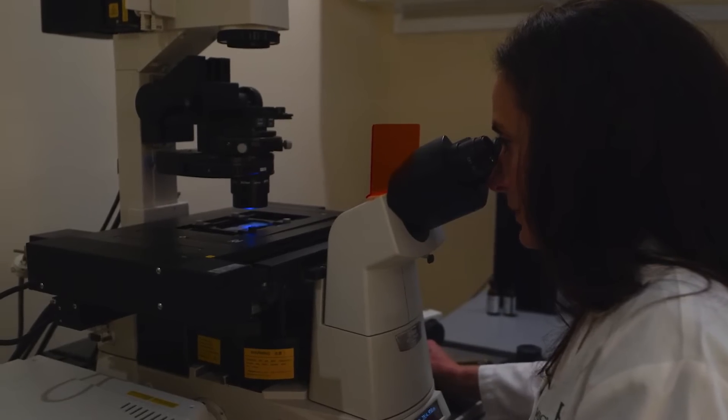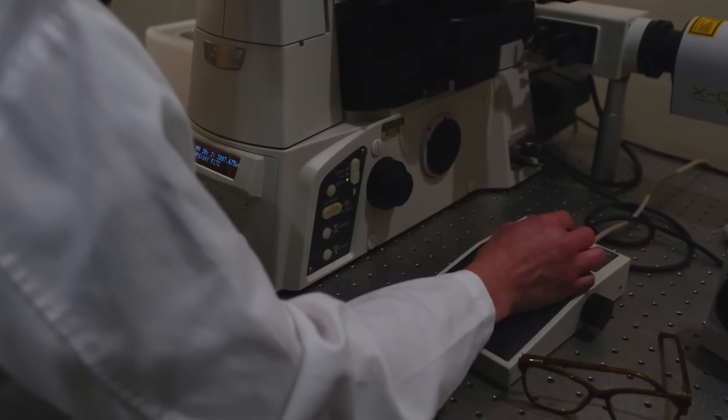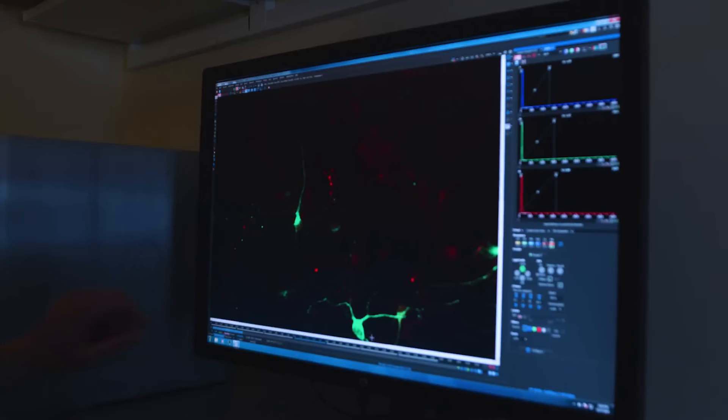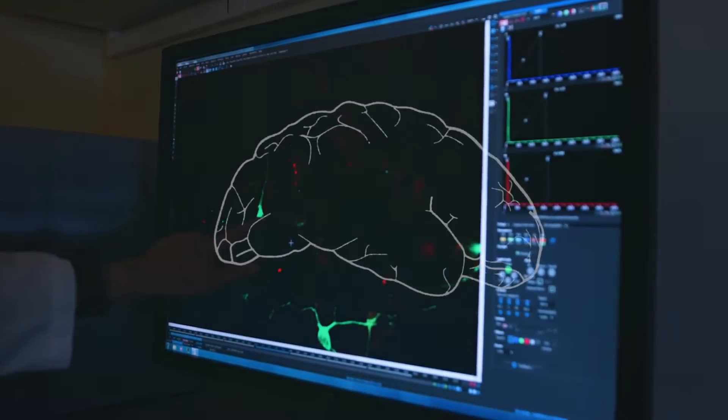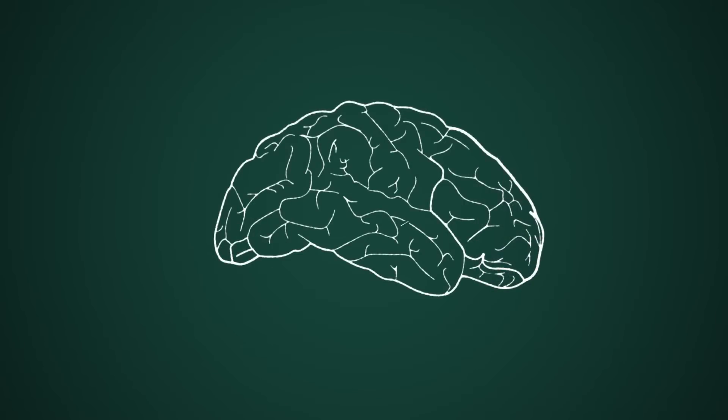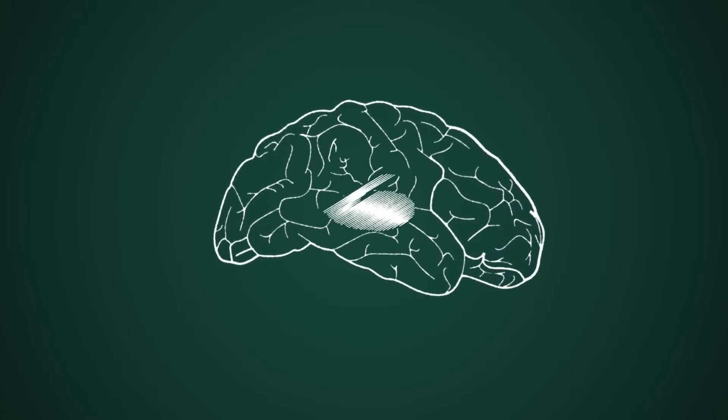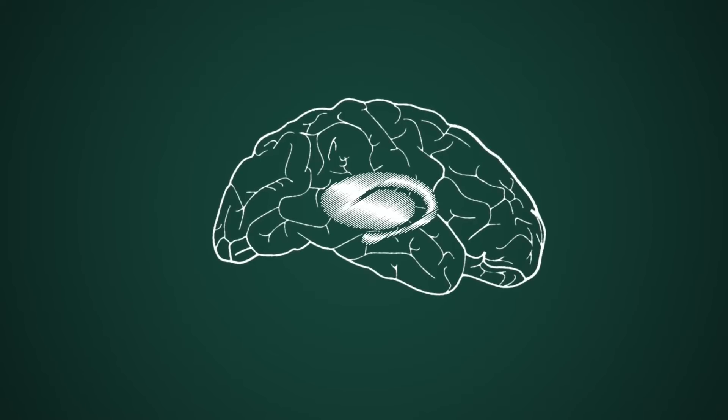So I've been really interested in ways that we can prevent that maladaptive plasticity and one of the things that we came upon was a little calcium channel that's located on a particular population of cells in a brain region called the striatum.